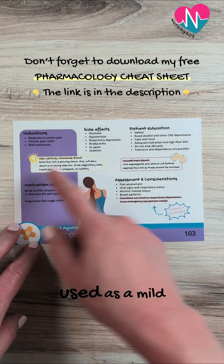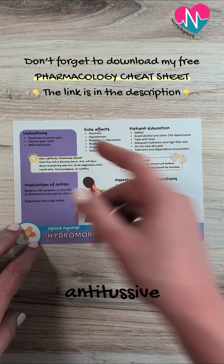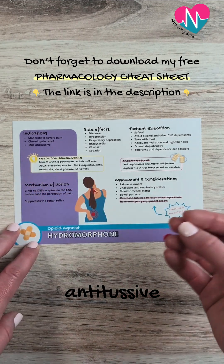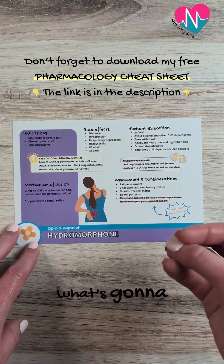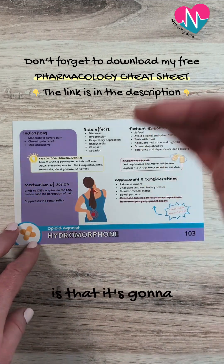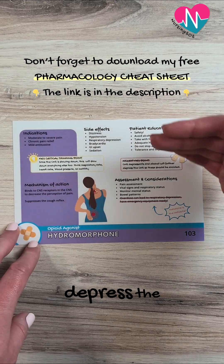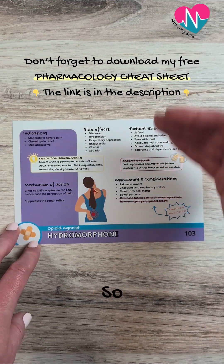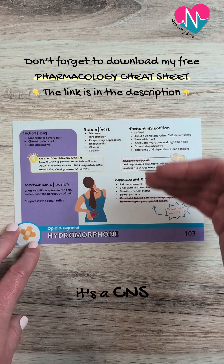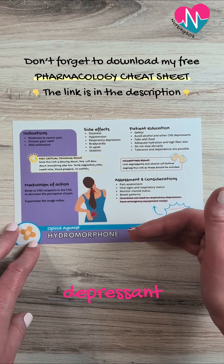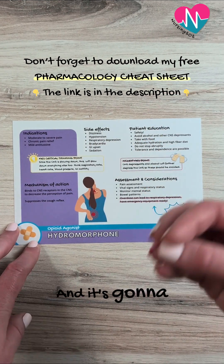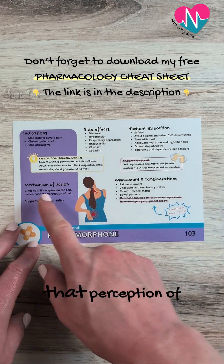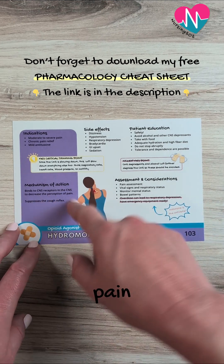It can also be used as a mild antitussive. Hydromorphone depresses the central nervous system, so it's a CNS depressant, and it decreases the perception of pain.